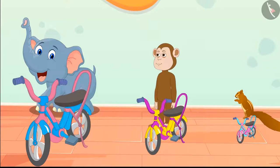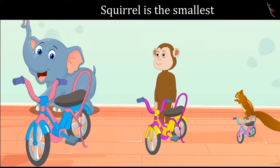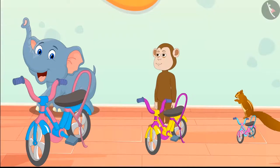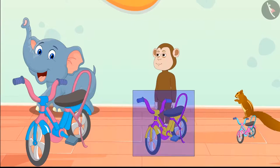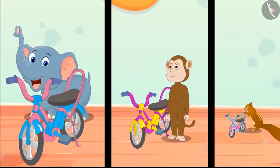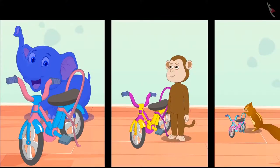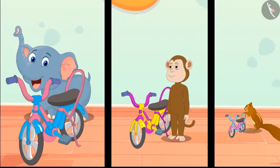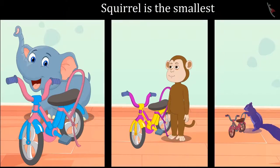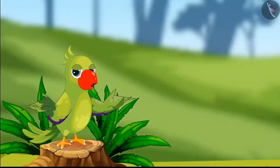Can you tell which is the squirrel's bicycle? Yes, you thought right, children. The squirrel is the tiniest among those three animals, and his bicycle is also the smallest — so the squirrel will get the smallest bicycle. And this is monkey's bicycle. The elephant is the biggest among those three friends, so he took the biggest bicycle. And the squirrel is the smallest among them, so he has taken the shortest bicycle.